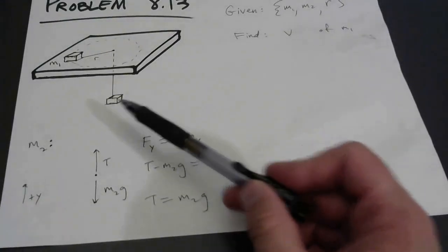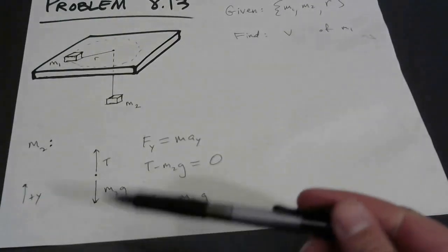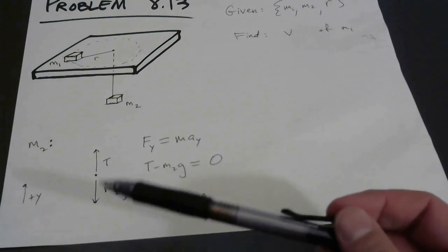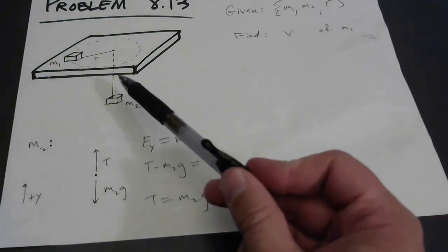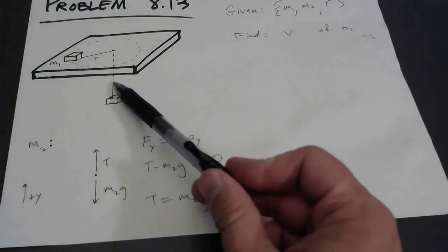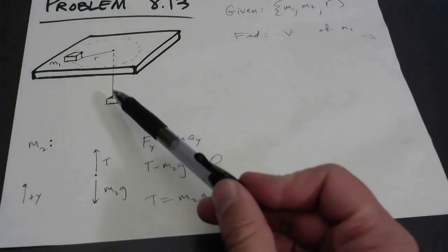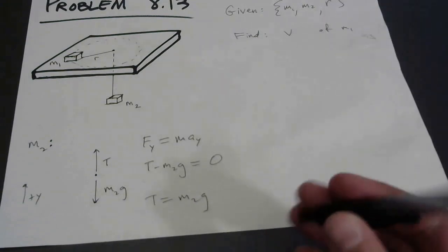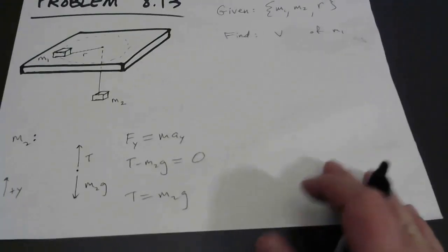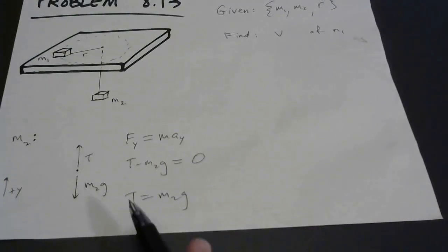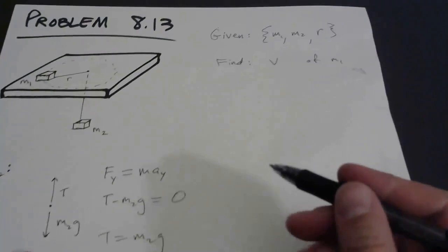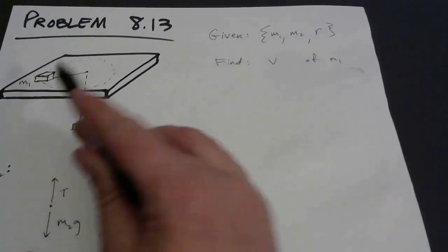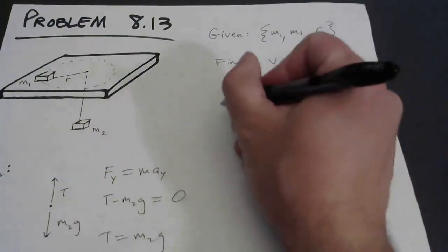That's a lot like your force table lab, right? You had some masses hanging off of pulleys, and we took the tension to equal the weight of those hanging masses. Now we know what the tension needs to be. How do we establish that tension? Let's go now to mass one.